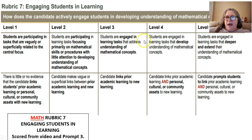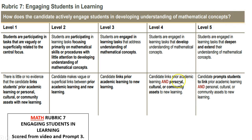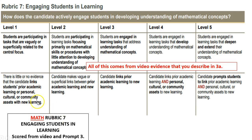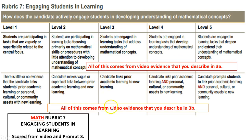Let's take a look at the rubric for rubric 7. This is the math rubric and it is scored primarily from the video with an explanation in prompt 3. That means the score is going to consider the video the primary source of evidence — if you say you've done something in your commentary but the scorer can't find it in the video, it's not going to count for you. All of the top part comes from the video evidence you explain and describe in 3a, and all of the bottom part comes from the video evidence you describe in 3b.